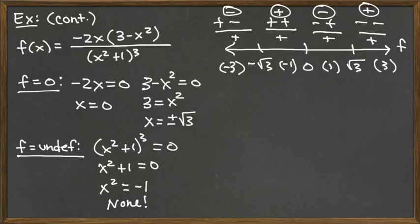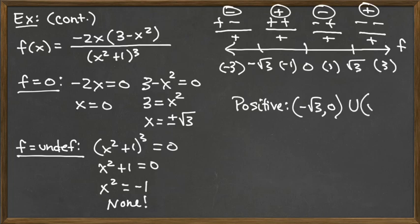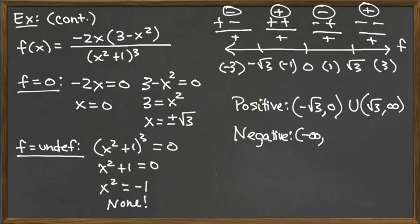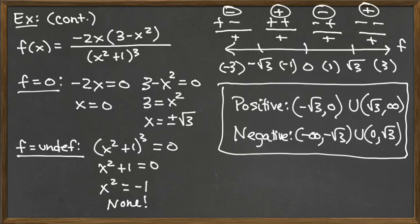We've assessed our signs and just need to write the conclusion. The function is positive on the interval negative root 3 to 0, and again from root 3 to infinity. It is negative on negative infinity to negative root 3, and on the interval 0 to root 3. The endpoints of these intervals are never test values — they are the switchover points where the function is zero or undefined. Each interval falls entirely into the positive or negative category with no overlap.